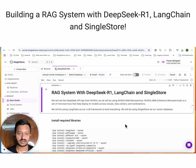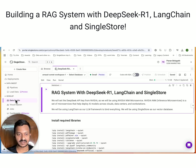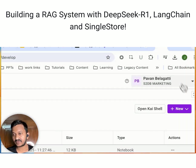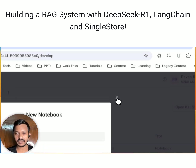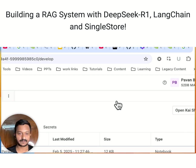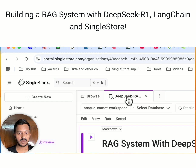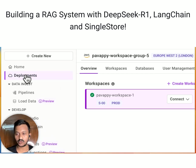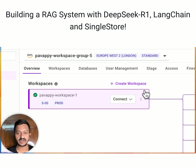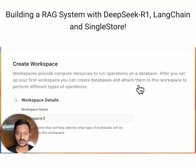Let me tell you about the Data Studio you see here - this is where you can create a new notebook. SingleStore has an integrated notebook feature where you can create a new notebook, give it a name, and get started just like Google Colab. So go to SingleStore.com, sign up and sign in. Once you sign in, this is where you'll land. Create a workspace for yourself - creating a workspace is easy.